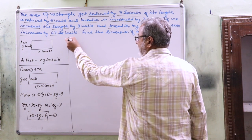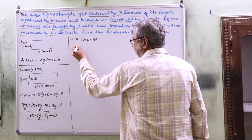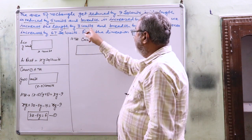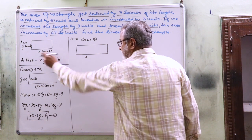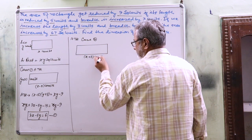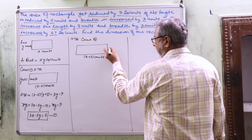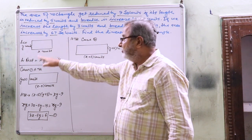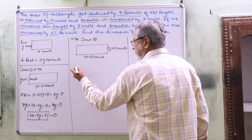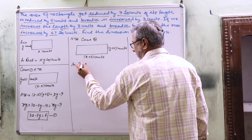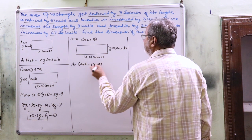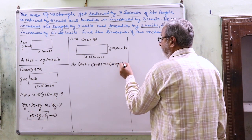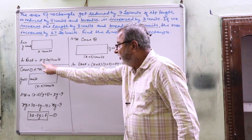Now Case 2 according to the question: if we increase the length by 3 units, the length becomes x plus 3, and the breadth by 2 units, the breadth becomes y plus 2, the area increases by 67 square units from its earlier area.